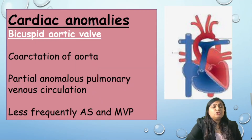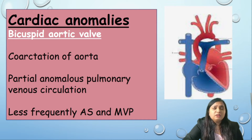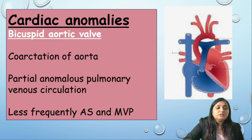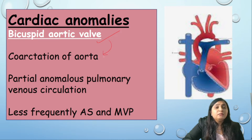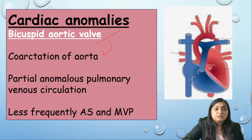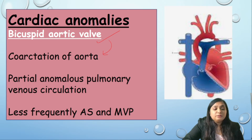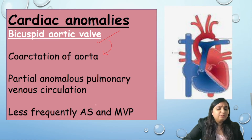The most common cardiac anomaly associated with Turner syndrome is bicuspid aortic valve. The second most common cardiac anomaly is coarctation of the aorta. Partial anomalous pulmonary venous circulation is also seen, and less frequently aortic stenosis or mitral valve prolapse are also associated with Turner syndrome.